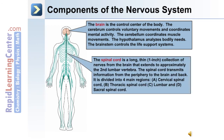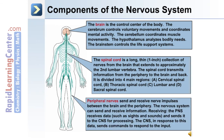The spinal cord is a long, thin collection of nerves that extend from the brain to approximately the second lumbar vertebrae. The spinal cord transmits information from the periphery to the brain and back. It is divided into four main regions: the cervical spinal cord, the thoracic spinal cord, and the lumbar and sacral spinal cord.